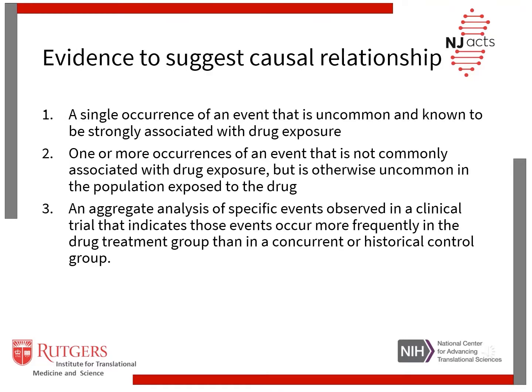The following are examples of evidence to suggest a causal relationship between a drug and an adverse event. One is a single occurrence of an event that is uncommon and known to be strongly associated with drug exposure. Two is one or more occurrences of an event not commonly associated with drug exposure but otherwise uncommon in the population. Three is an aggregate analysis of specific events that indicates those events occur more frequently in the drug treatment group than in a concurrent or historical control group.